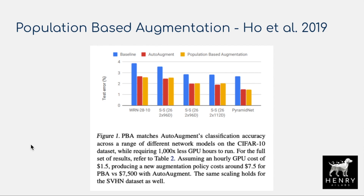Population-based training has also been extended to data augmentation policy learning, where you search through magnitude parameters for augmentation operations — like rotating an image 30 versus 45 degrees — and probabilities of applying each operation. Auto-augment is a popular technique using reinforcement learning to search for augmentation policies, but population-based augmentation performs a bit better and requires a thousand times less GPU hours to run, making it much more computationally efficient.